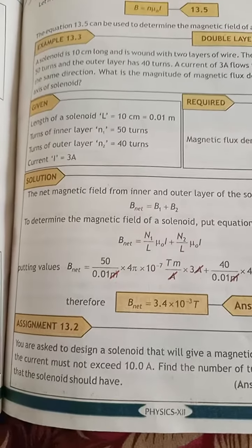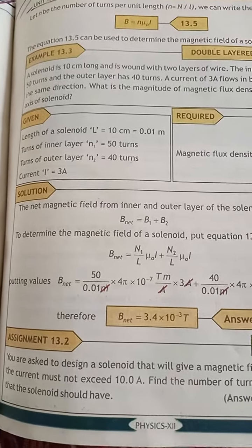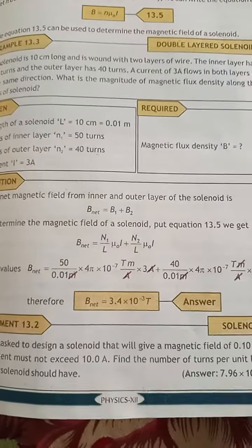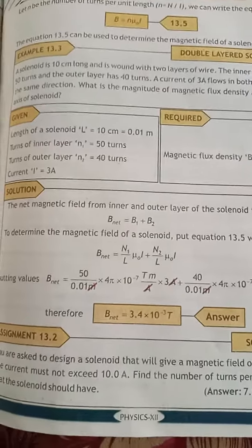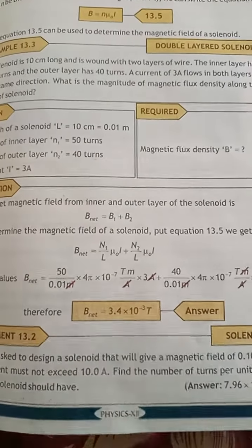Today we are going to do Example 13.3 and Assignment 13.2. In Example 13.3, I am saying that it is a solenoid and its length is 10 cm and it is bounded with two layers of wire.